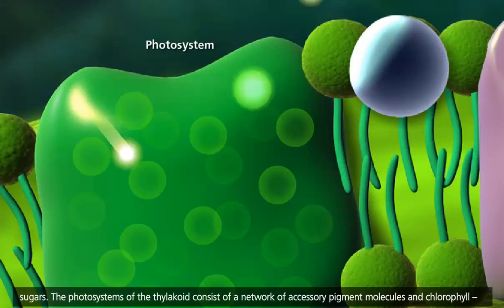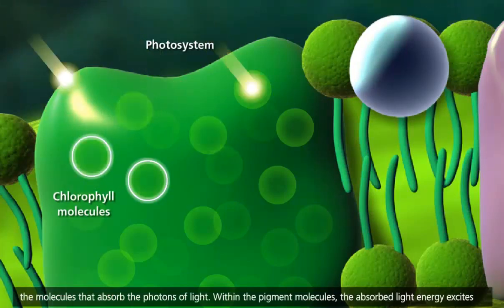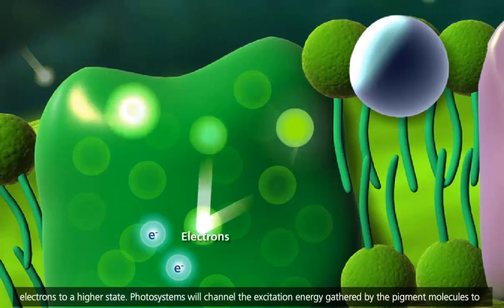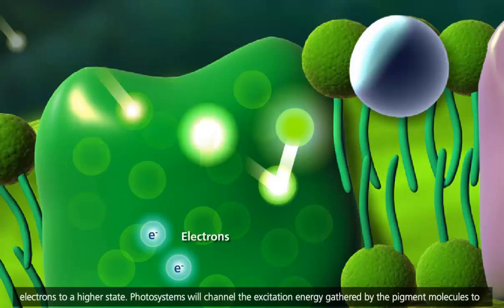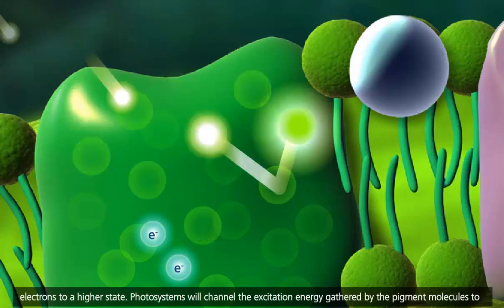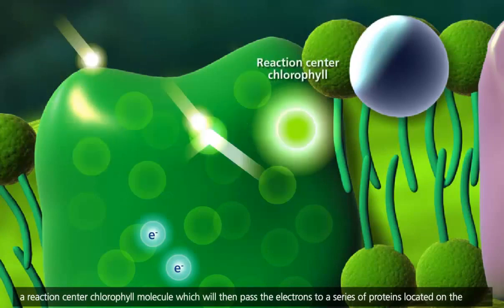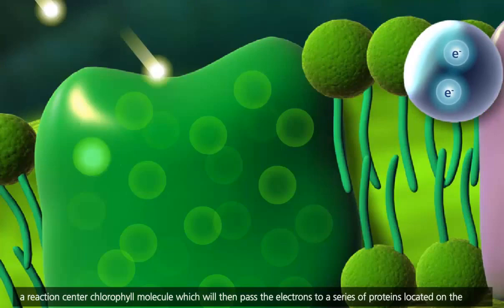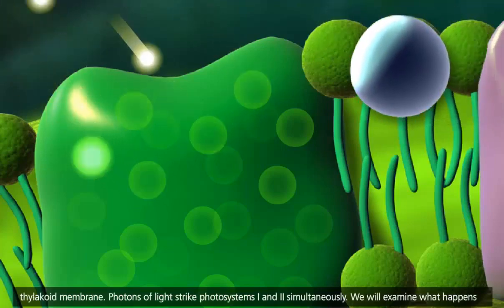The photosystems of the thylakoid consist of a network of accessory pigment molecules and chlorophyll, the molecules that absorb the photons of light. Within the pigment molecules, the absorbed light energy excites electrons to a higher state. Photosystems will channel the excitation energy gathered by the pigment molecules to a reaction center chlorophyll molecule, which will then pass the electrons to a series of proteins located on the thylakoid membrane.